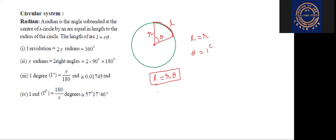How to find the area of a sector? The formula is A = ½R²θ. Here theta is in radians. How to denote? We write power C. Degree is denoted 1°, grade is 1^G, radian is 1^C. Students, are you understood?